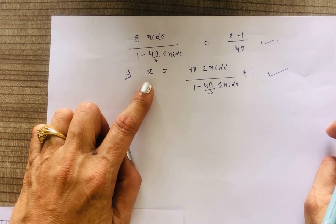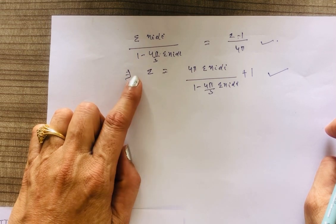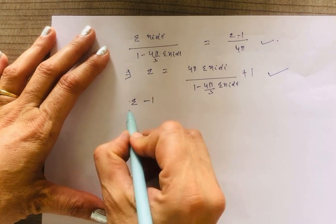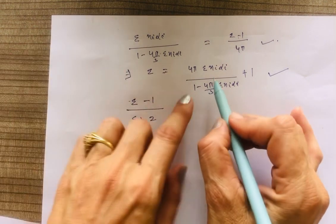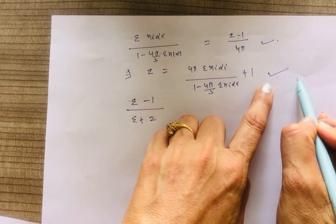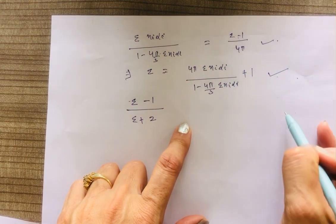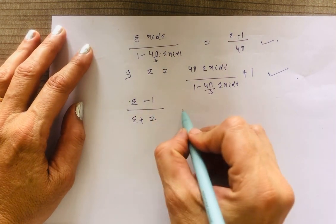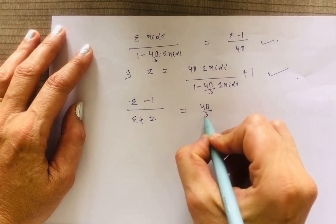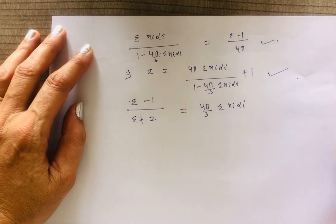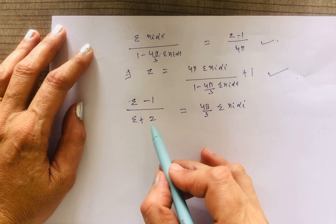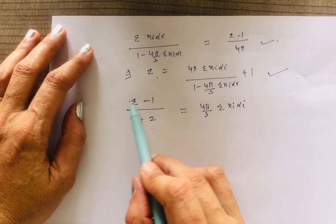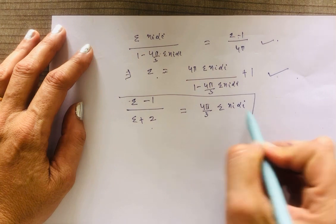Now, if we compute (epsilon − 1)/(epsilon + 2) using this value of epsilon — subtracting 1 in the numerator and adding 2 in the denominator — after simplification we get the Clausius-Mosotti relation: (epsilon − 1)/(epsilon + 2) = (4π/3) · Σ N_i α_i. This is the Clausius-Mosotti relation.